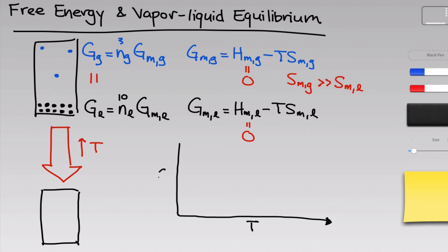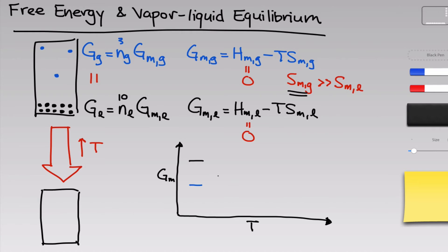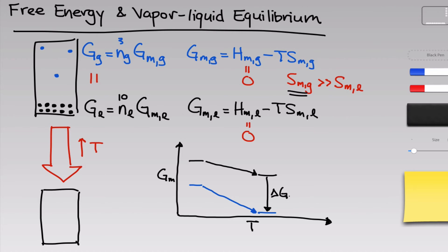Let's put temperature on the x-axis and the molar free energy of either the gas or the liquid on the y-axis. Because the entropy of the gas phase is much greater than the entropy of the liquid phase, the free energy of the gas phase will be much lower than the free energy of the liquid phase, ignoring the influence of enthalpy. An increase in temperature is going to cause a decrease in free energy, since both entropies are positive. However, the factor multiplying the temperature in the free energy of the gas — that is, its molar entropy — is much greater than that of the liquid. So the free energy of the gas phase will decrease much more rapidly, producing a much larger delta G, or difference in free energy, at a higher temperature.